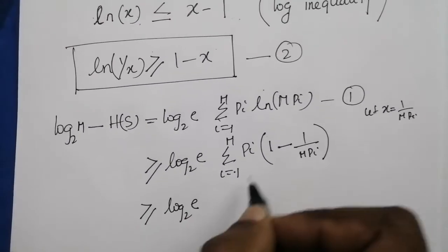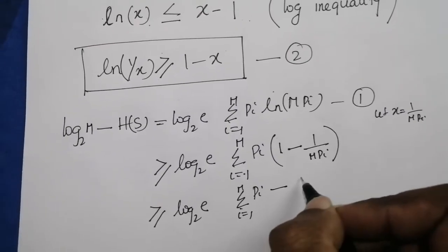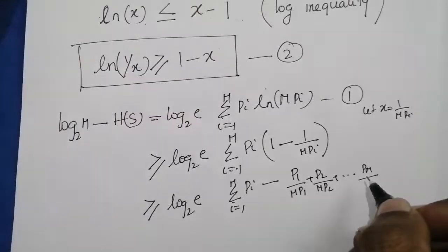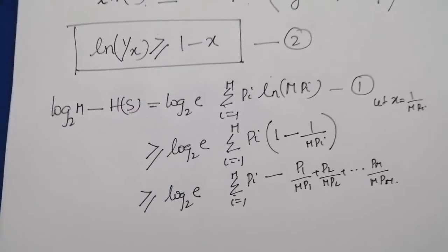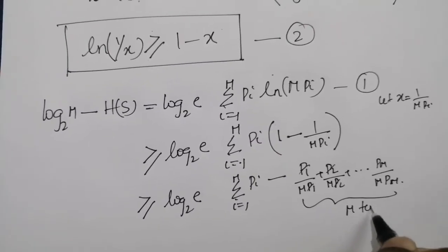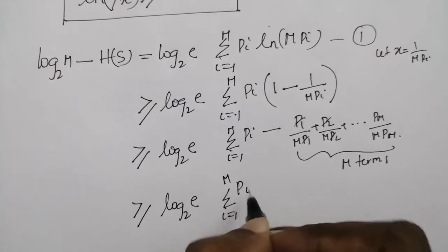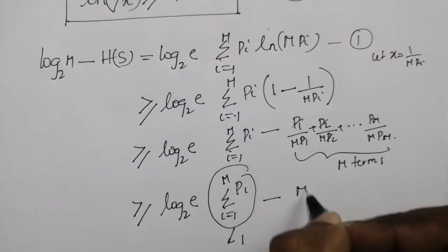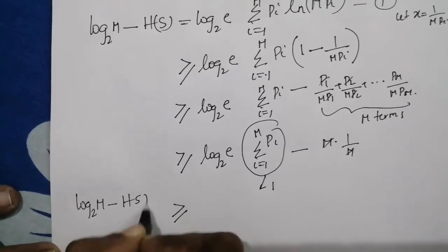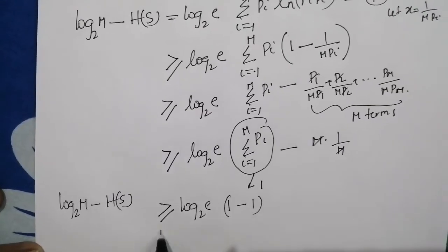Expanding the sum: log₂m − H(S) ≥ log₂e · Σᵢ [pᵢ − pᵢ/(m·pᵢ)]. The term pᵢ/(m·pᵢ) = 1/m, and there are m such terms, so the second sum equals m · (1/m) = 1. Therefore log₂m − H(S) ≥ log₂e · (1 − 1) = 0.